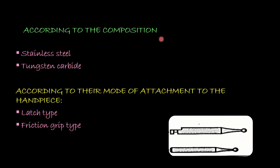Now coming to the classification of burs. According to composition they are classified as stainless steel and tungsten carbide, which we have discussed. According to their mode of attachment to the handpiece, they may be latch type or friction grip type. Here we can see this type of bur has a latch type attachment to the handpiece, and these are friction grip type.